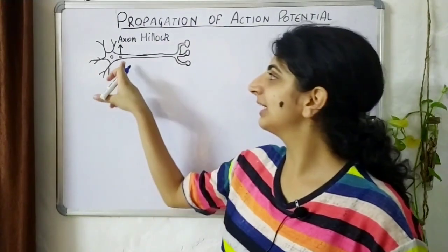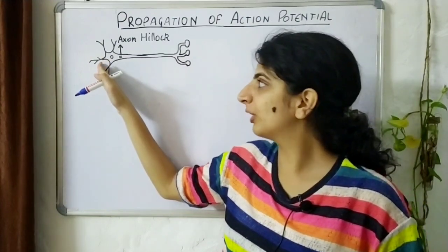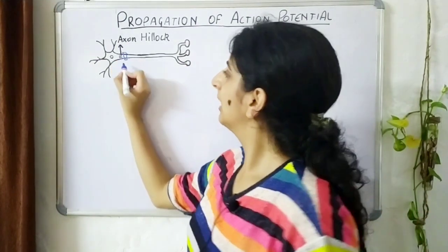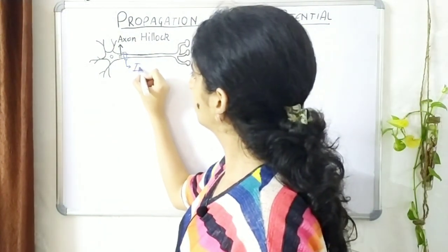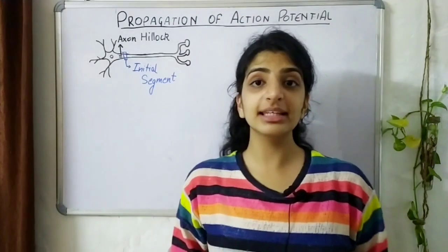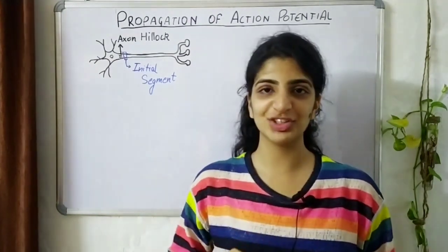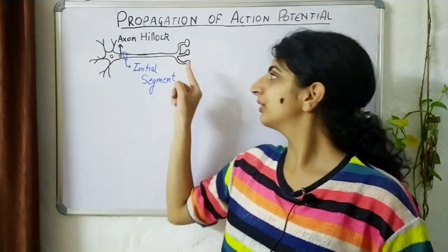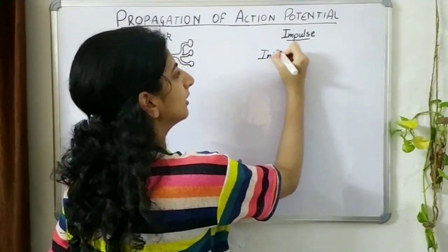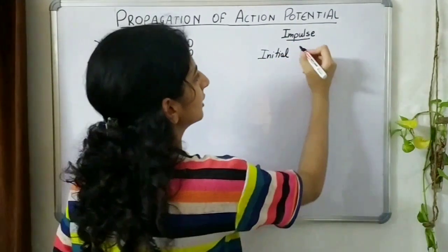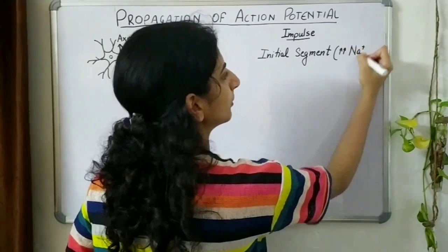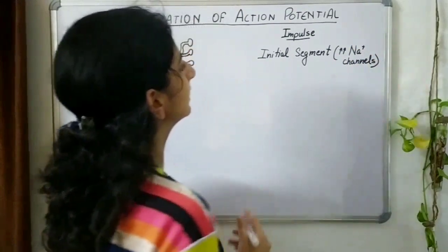In the structure of a neuron, there is a very important part called the axon hillock, present between the cell body and the start of the axon. Just adjacent to this hillock there is a zone known as the initial segment. This initial segment is the region where our action potential will be initiated. It is a region that has a very high density of sodium channels, which are needed for generation of an action potential. These will create a very strong impulse that can then move forward.